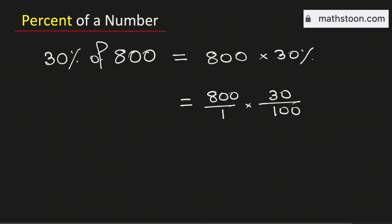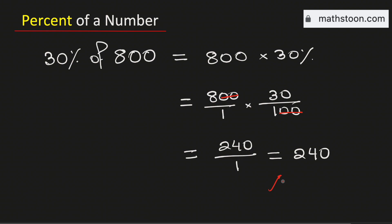Now we will cancel the common zeros. So it will be equal to 8 times 30 which is 240 divided by 1 times 1 which is 1, and this is equal to 240. Therefore 30% of 800 is equal to 240 and this is our final answer.